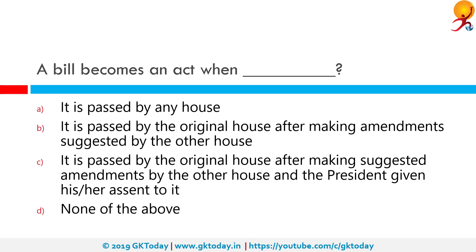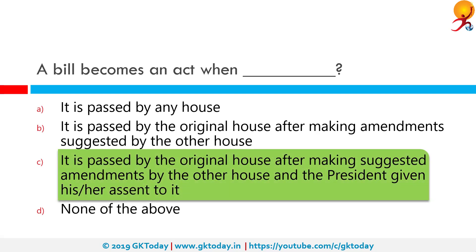A bill becomes an act when it is passed by the original house after making suggested amendments by the other house, and the president has given his or her assent to it. A bill is a draft of a legislative proposal which has to pass through various stages before it becomes an act of Parliament. The legislative process starts with the introduction of a bill in either house of Parliament, i.e., Lok Sabha or Rajya Sabha, and once passed in both houses, the bill needs to get assent of the president to become an act.